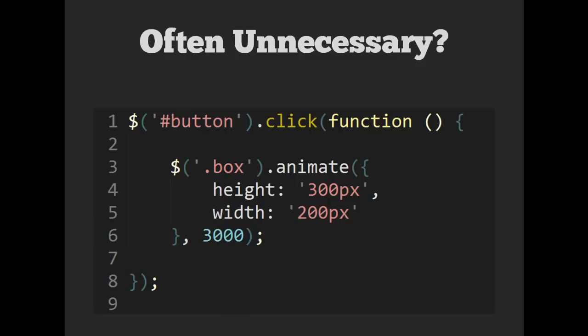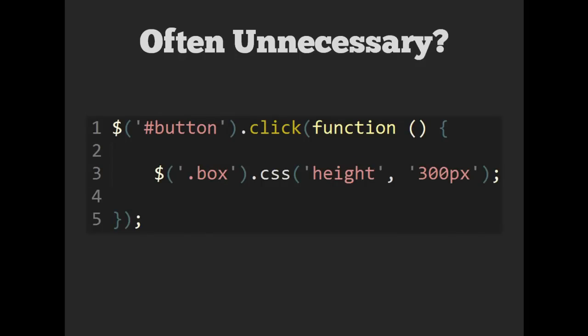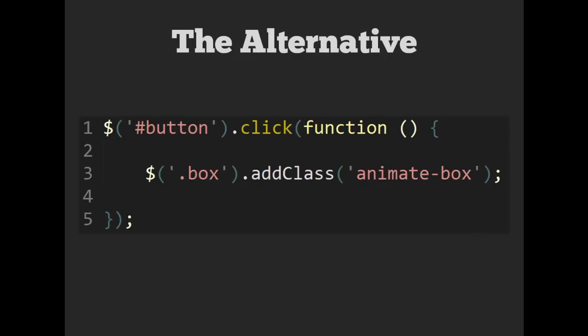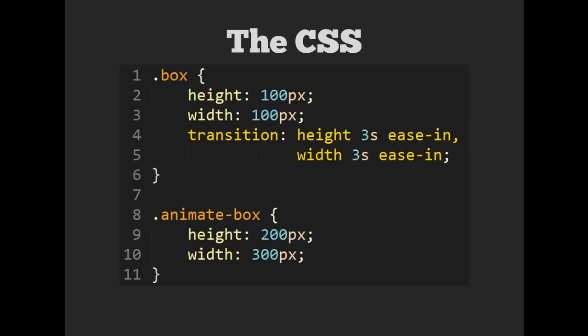Mixing our CSS with our jQuery logic — especially using the animate method or changing CSS on the fly with the CSS method — is unnecessary. The alternative is to use classes. Same thing happens: in response to the event, instead of animating the box directly with JavaScript, we add a class called 'animate-box.' Then in our CSS, that class is defined with the same height and width changes over a duration of three seconds using a CSS transition.